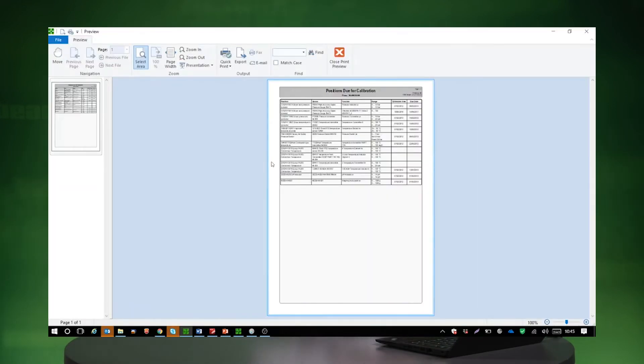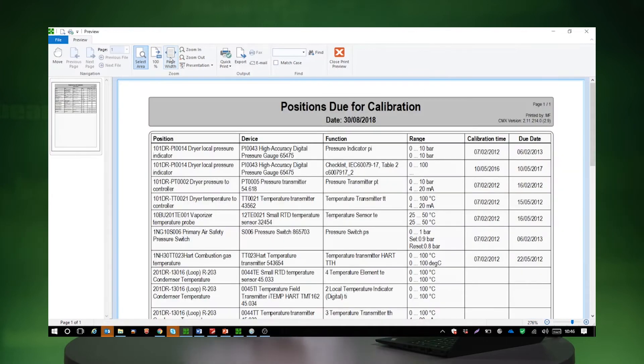Let's preview that report and see how it looks like. Again, you can use the filters to pre-filter the information that you want, and then you drag and drop it into the box. So if you go for page width, positions due for calibration, there is a list of positions. And you can see positions device function, so what does it do, range which is super interesting and important prior to doing a calibration.